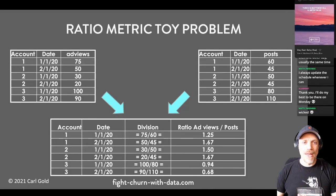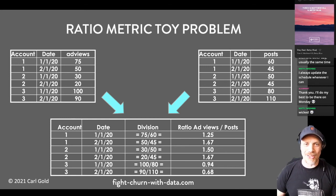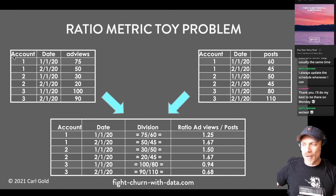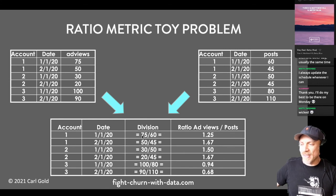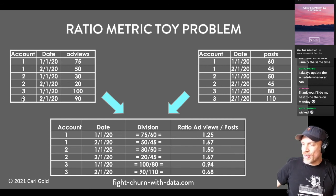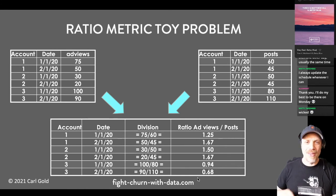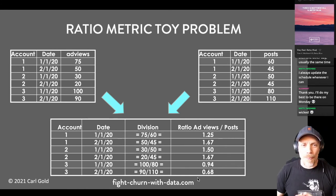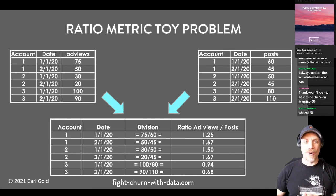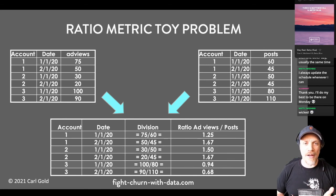How do you calculate a ratio metric? It's actually dead simple — you just take the ratio of one metric to another. Here's a toy example: if account one has 75 ad views and 60 posts, you literally divide 75 by 60 and you get ad views per post: 1.25. And if account three has 90 and 110, you get the idea. But I'm going to show you this in SQL because we're going to calculate this efficiently for a whole bunch of customers and dates in one fell swoop using SQL. That is listing 7.1, the ratio metric query.